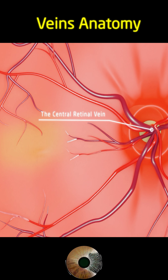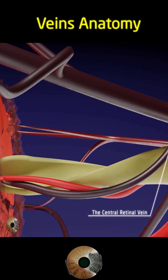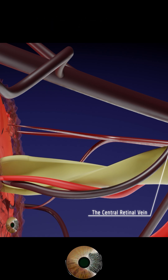From the optic disc, it follows a path posteriorly through the optic nerve, within its central core, just like the central retinal artery. As it exits the optic nerve, it pierces the meninges around 8-10 mm behind the globe.